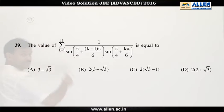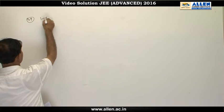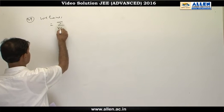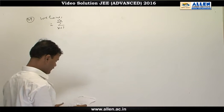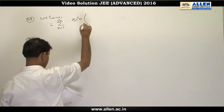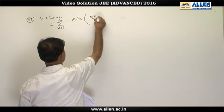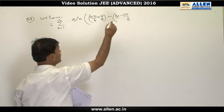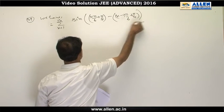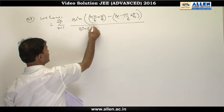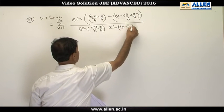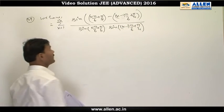Question number 39. This expression will be equal to, by difference series, summation from k equal 1 to 13 of sin of (k·π/6 + π/4) minus (k−1)·π/6 + π/4, upon sin(k·π/6 + π/4) multiplied by sin((k−1)·π/6 + π/4), using the method of differences.